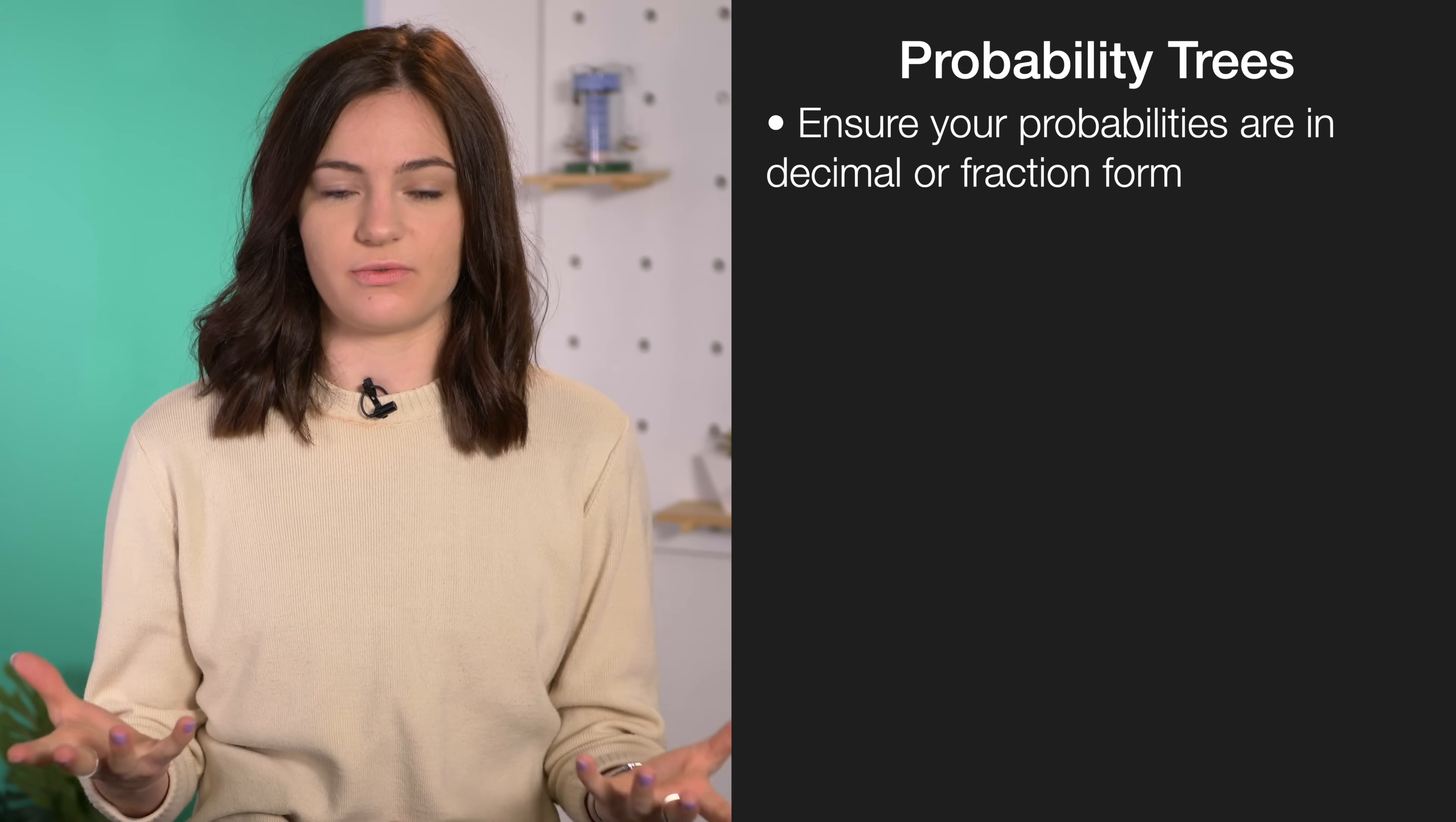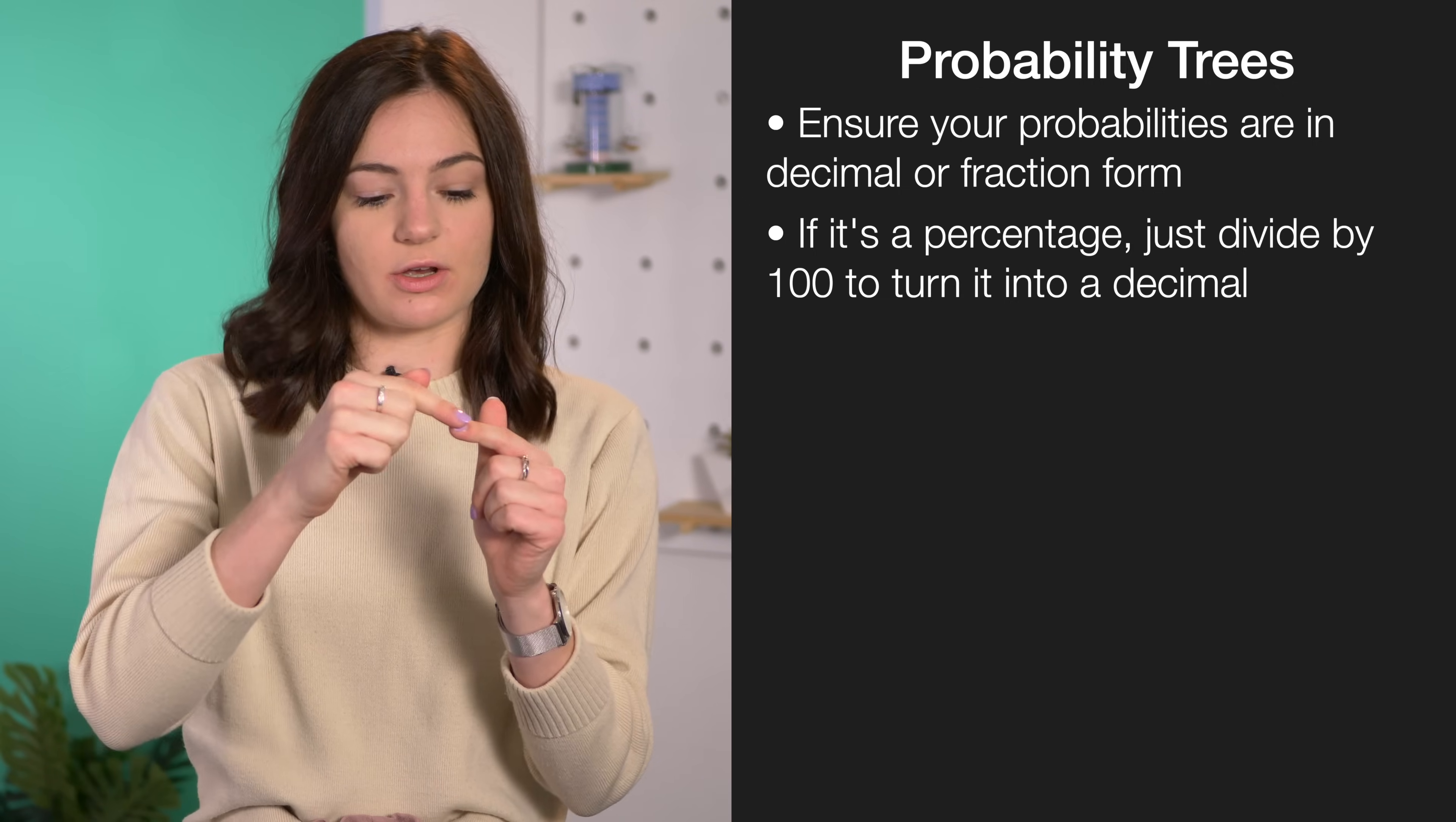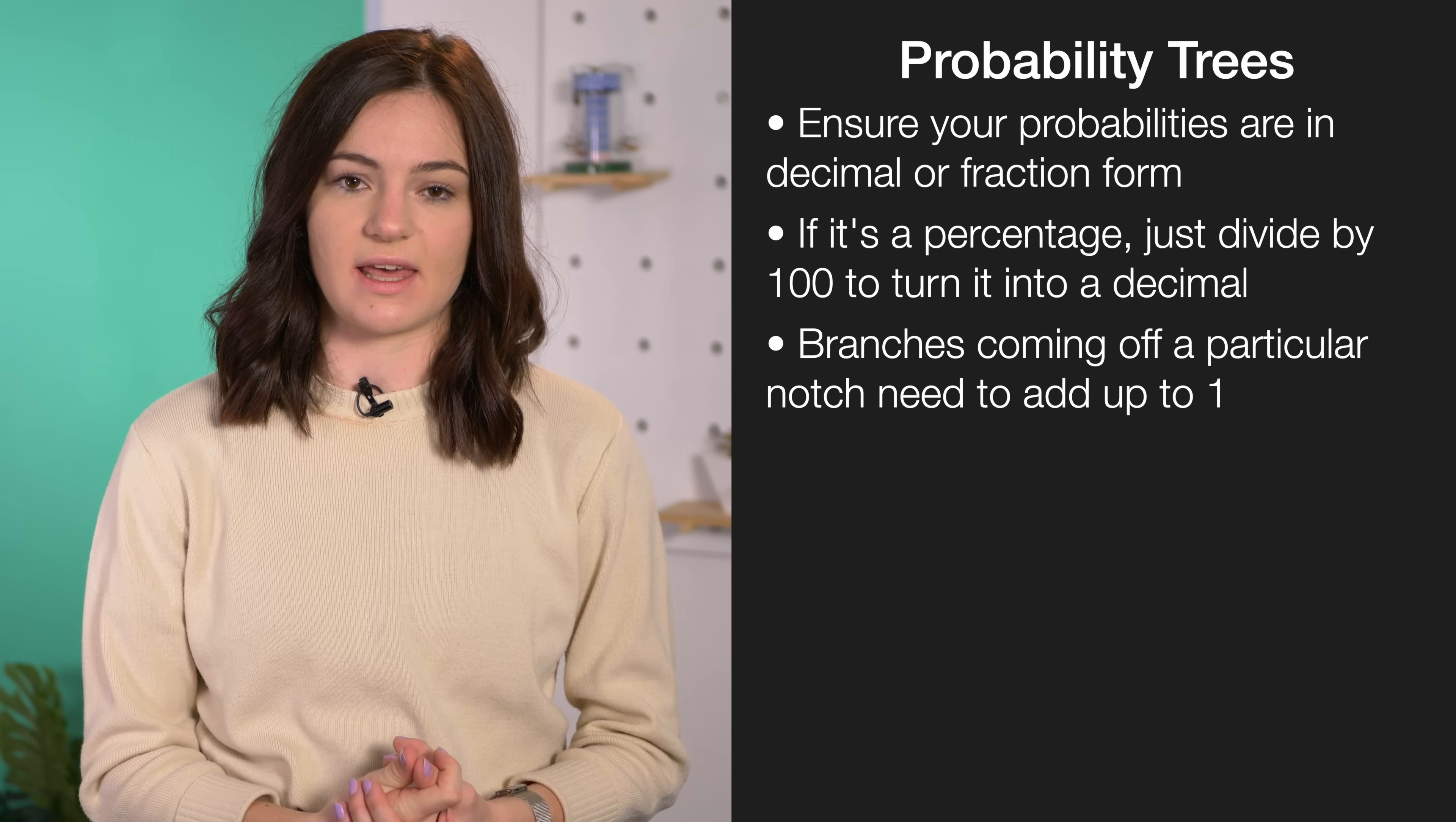For probability trees, there's three main things that you need to pay attention to. First is making sure that you have your probabilities in either a decimal or a fraction form. That makes it easier for you to multiply them together. If you're given it in a percentage, you just have to divide it by 100 to get it into a decimal. Secondly, when you have your probability tree and it goes off from a notch, all the probabilities that go off from that notch add up to one. This is a good way for you to check if your answers make sense and it's best to check it straight after you've filled out the tree rather than realize you made a mistake later on.